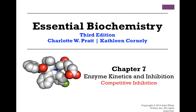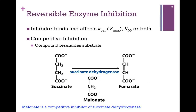In our ongoing studies of enzyme kinetics and inhibition, in this lesson we want to look at competitive inhibition. This is the first of our models for reversible enzyme inhibition. In each case of reversible inhibition, the inhibitor will bind the enzyme and that will change one of our kinetic constants — either Kcat, which is directly related to Vmax, or it will change Km, which is a measure of substrate affinity, or it might change both.